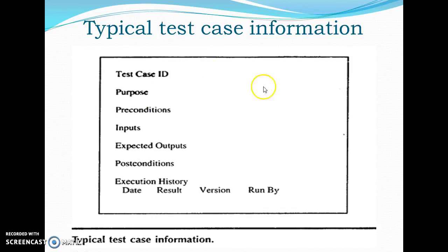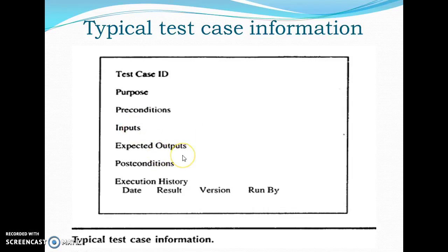A typical test case information should consist of the following sections: the test case ID, a unique ID given to any test case; the purpose, which this particular test case is going to serve in the entire application; any preconditions that exist; the inputs we need to provide to this test case; the expected output after execution of this test case; any post conditions that result due to the execution of this test case; and lastly, the execution history in terms of its date, result, version, and the run-by information.